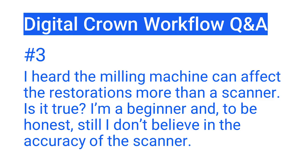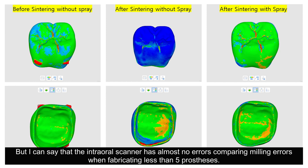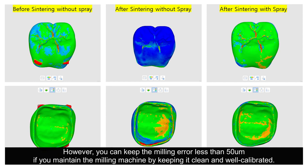Question number three: I heard the milling machine can affect restorations more than the scanner. Is it true? I'm a beginner and I still don't fully believe in the accuracy of the scanner. I know what you mean — many novice users still don't believe in the accuracy. But the intraoral scanner has almost no errors compared to milling errors when fabricating less than five prostheses. However, you can keep the milling error less than 50 micrometers if you maintain the milling machine by keeping it clean and well calibrated.